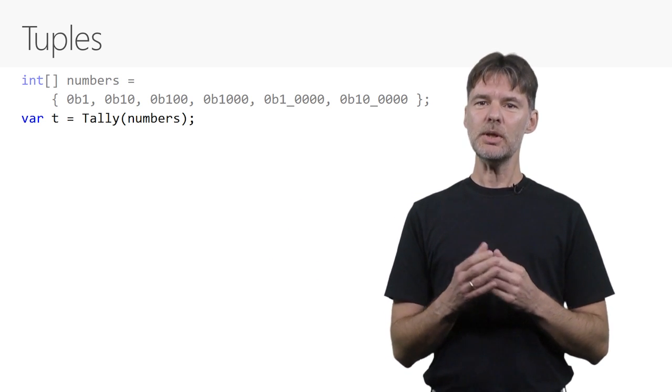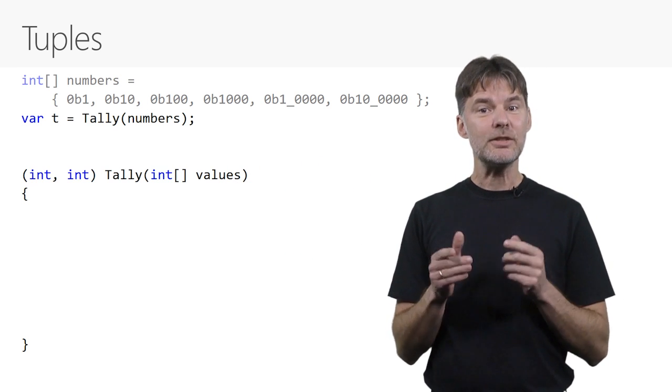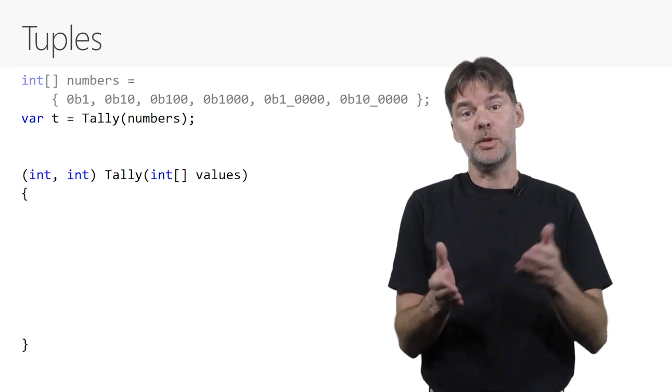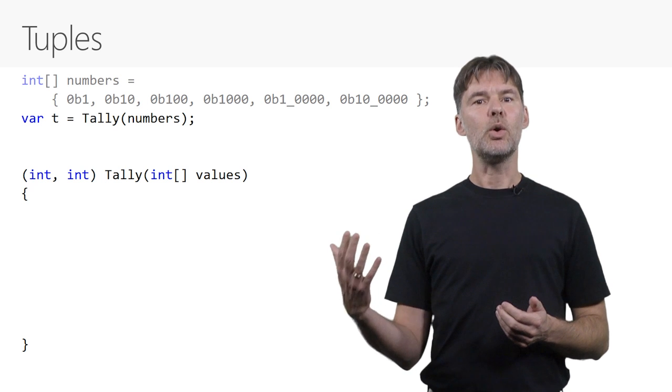Using tuples, you can declare tally like this. Look at the return type. It's a tuple type with, in this case, two other types in parentheses. That can be more than two if you like. The type represents a value that holds two ints.